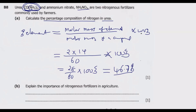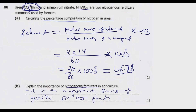Question B: Explain the importance of nitrogenous fertilizers in agriculture. Nitrogen is a fertilizer that contains nitrogen. Its importance is that it is an important source of growth for plants — nitrogen promotes plant growth. That is the importance of nitrogen, and that earns you one mark.